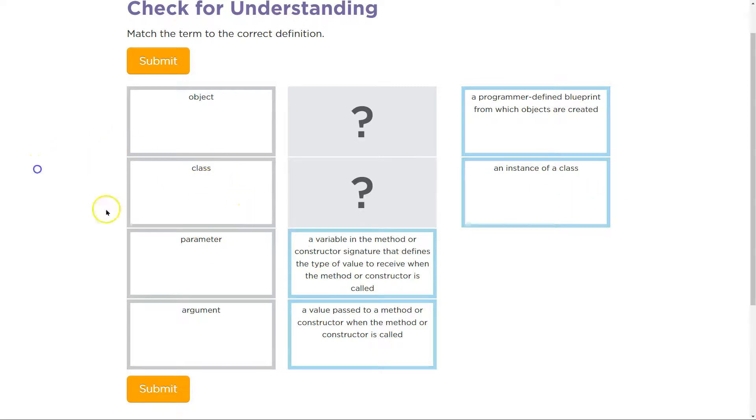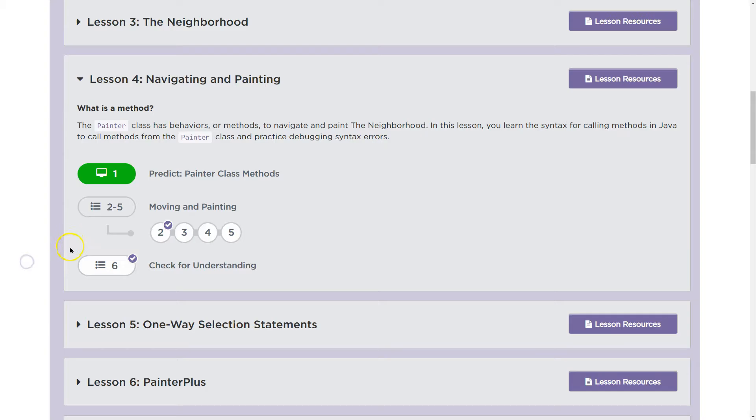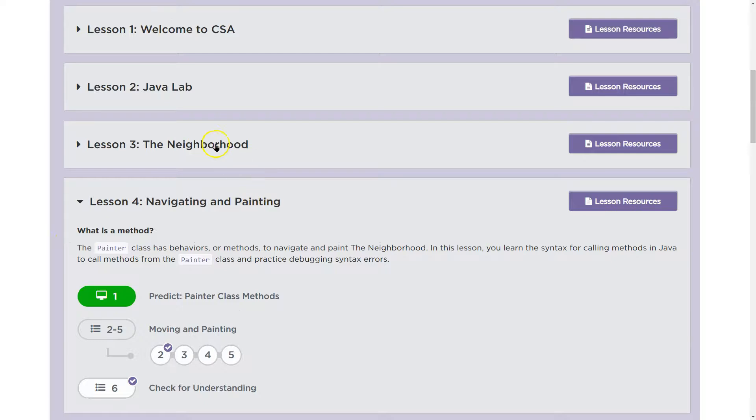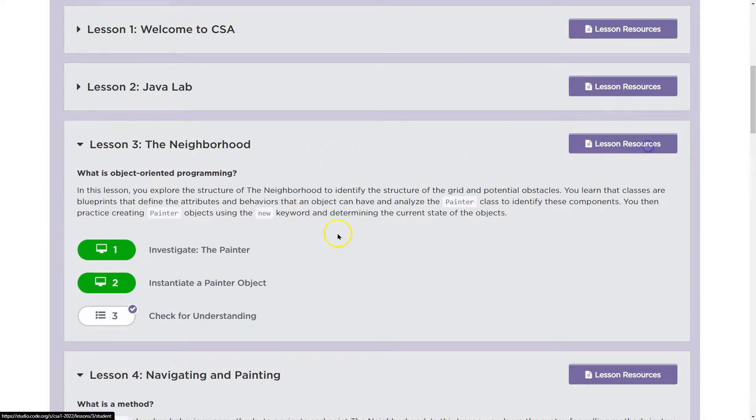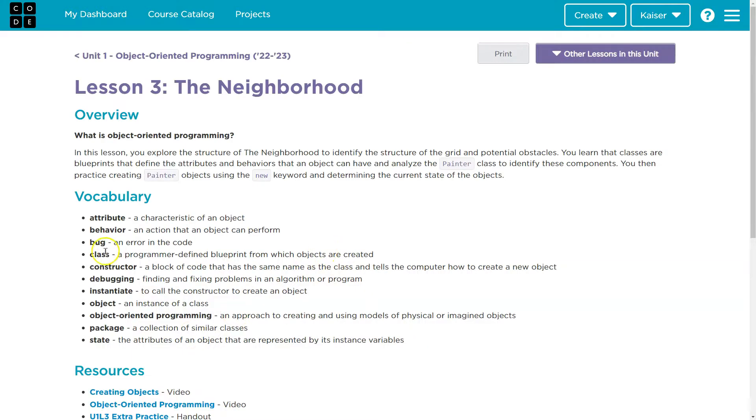All right, let's see if we can find these other things. A class and an object. Let me go back here, and let's see. Let's look at the neighborhoods for lesson resources. Oh, class. A programmer to find blueprint for which objects are called, and then an object is an instance of a class.